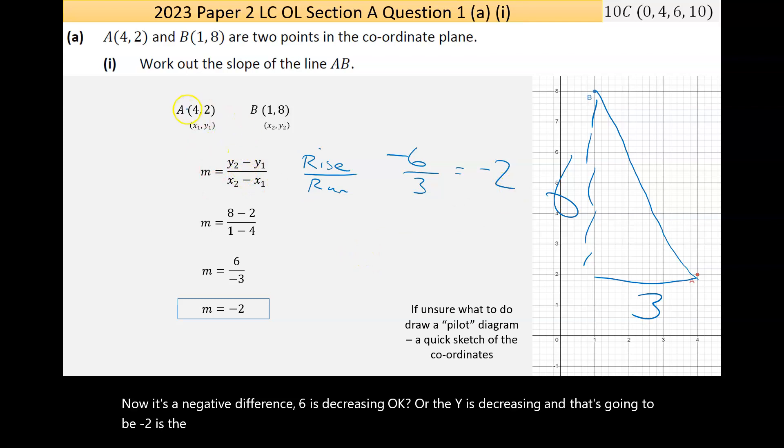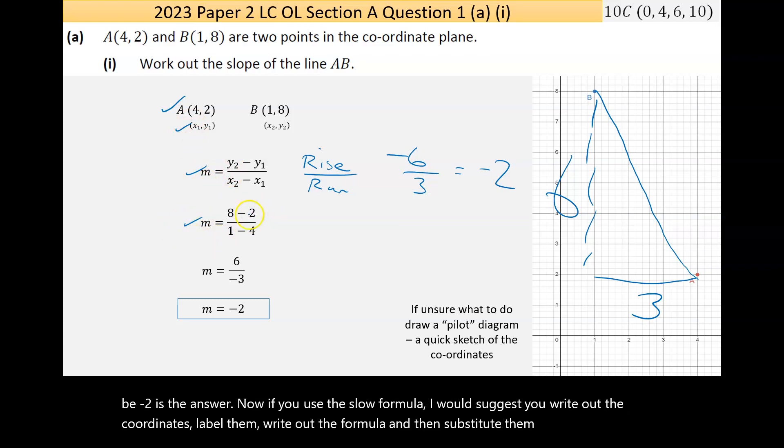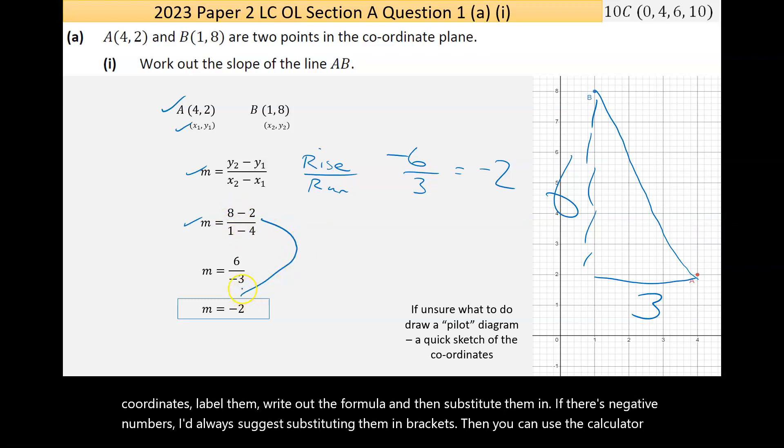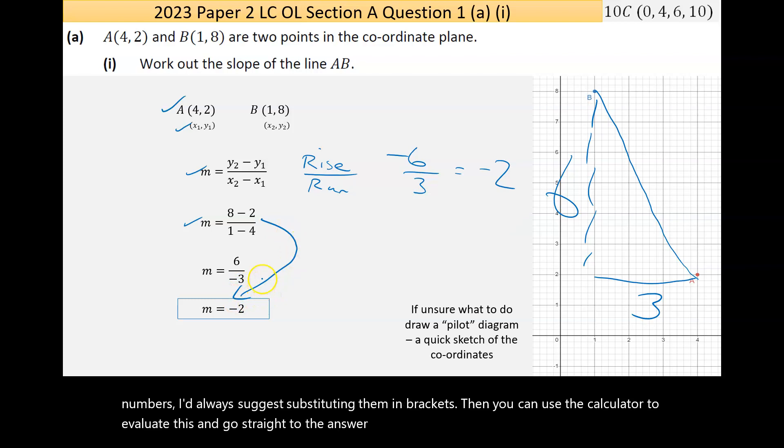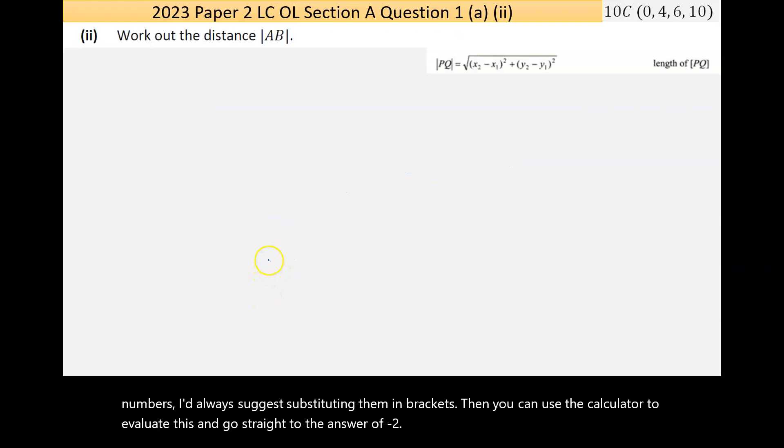If you're using the slope formula, I would suggest you write out the coordinates, label them, write out the formula, and then substitute them in. If there's negative numbers, I'd always suggest substituting them into brackets, then you can use the calculator to evaluate this and go straight to the answer of negative two.